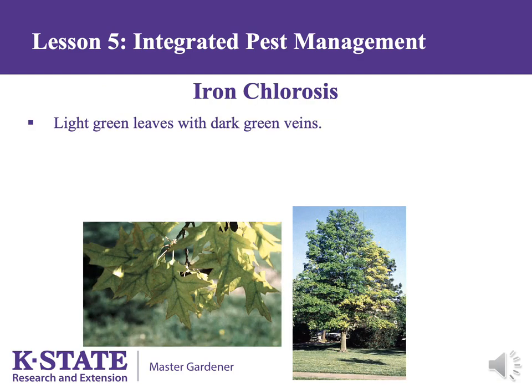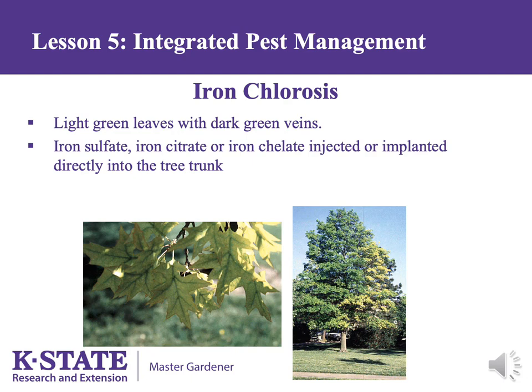Iron chlorosis is a common condition in Kansas, evidenced by light green leaves with dark green veins. It is caused by the leaves receiving insufficient iron — though this can be due to a lack of iron in the soil, it is more commonly due to high pH soils tying up iron so the roots can't absorb it. The long-term solution is to lower the soil pH. A more immediate fix is to inject the tree with iron citrate or iron sulfate, which produces very quick responses often lasting several years. This is best done in spring as leaves reach full size; if the weather turns hot, this procedure can burn every leaf off the tree.